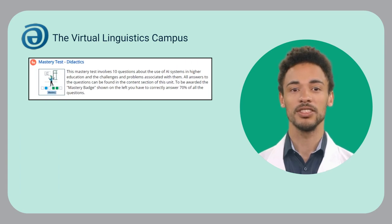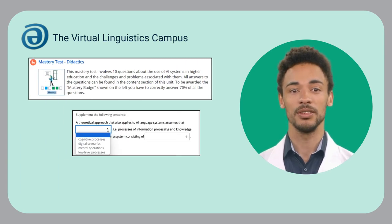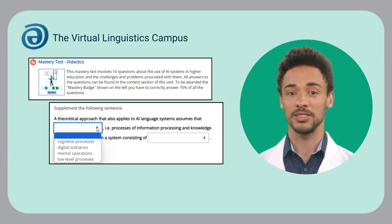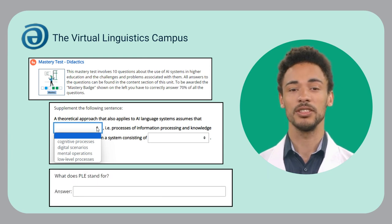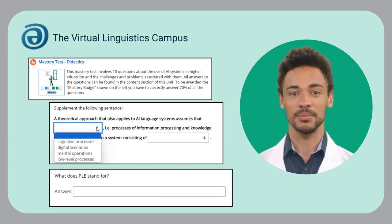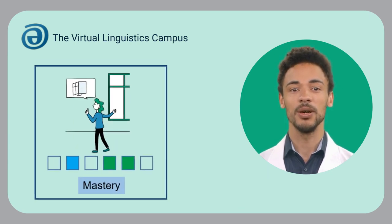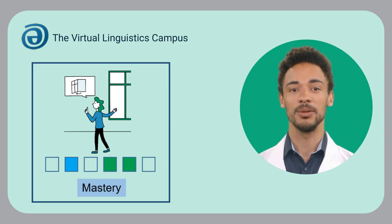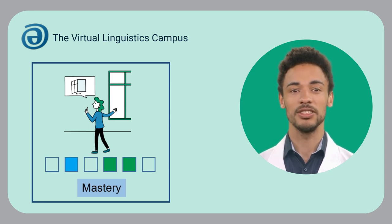The mastery test of this unit involves 10 questions about the use of AI systems in higher education and the challenges and problems associated with them. To be awarded the mastery badge, shown on my right, you have to correctly answer 70% of all the questions.